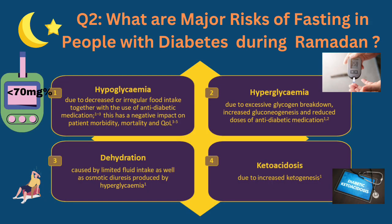What are the major risks of fasting in people with diabetes during Ramadan? The first and foremost is hypoglycemia or low sugar, which is less than 70 mg percent, or hyperglycemia or high sugar more than 300 mg percent. Dehydration because of restricted fluid intake, or if sugar is not controlled due to excess urination, and ketoacidosis — particularly in people with type 1 diabetes or type 2 diabetes with severe insulin deficiency.